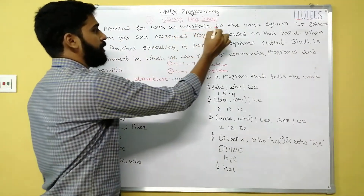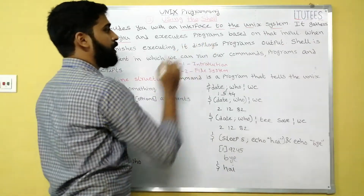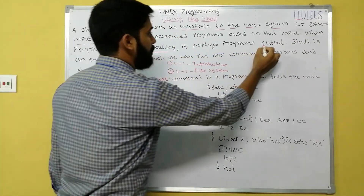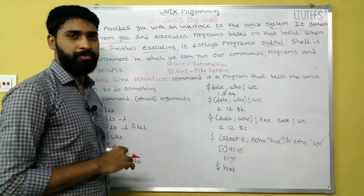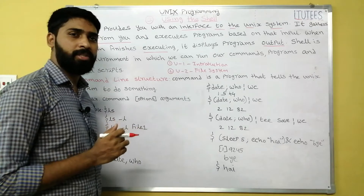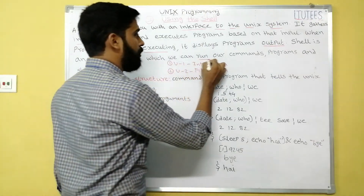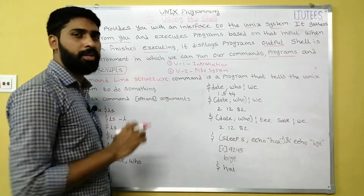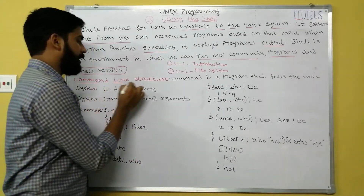A shell provides you with an interface to the Unix system. It gathers input from you and executes programs. Based on the input, when a program finishes executing, it displays the program's output. Shell is an interface between the user and the Unix system — it takes input from the user, executes those instructions, and after execution displays the output.